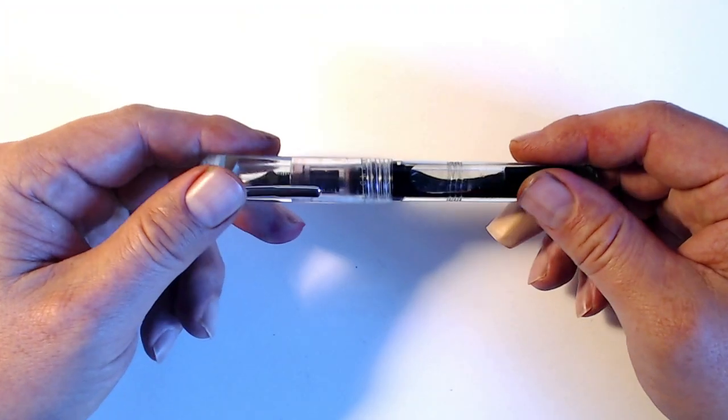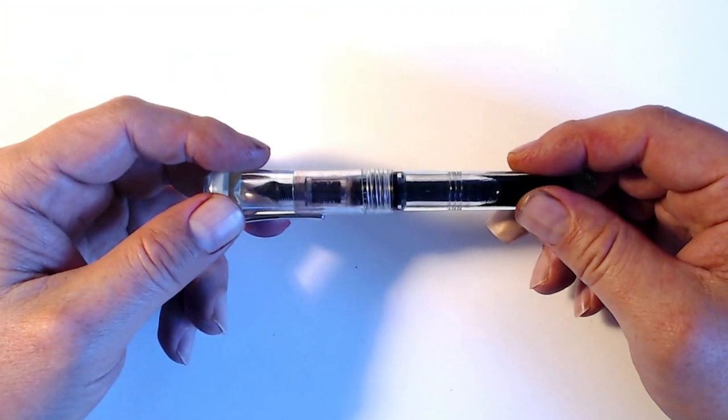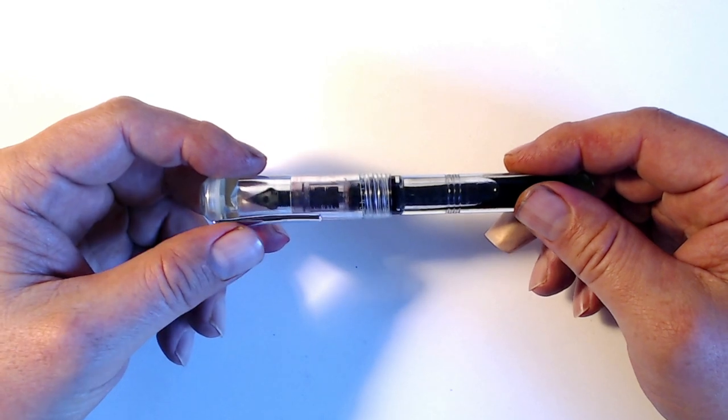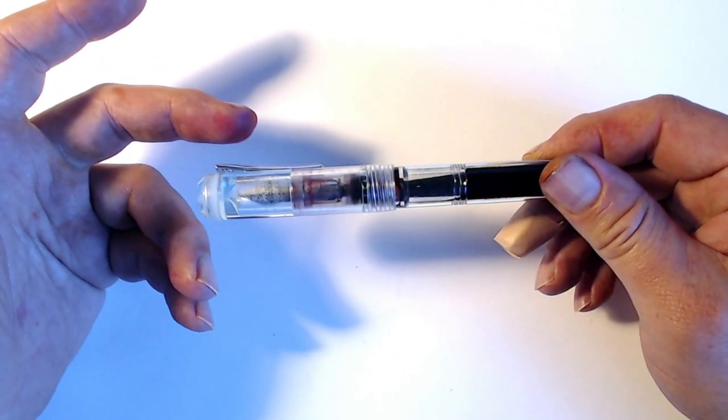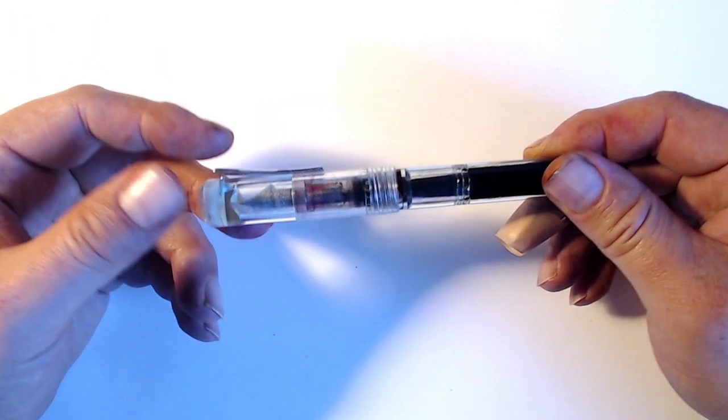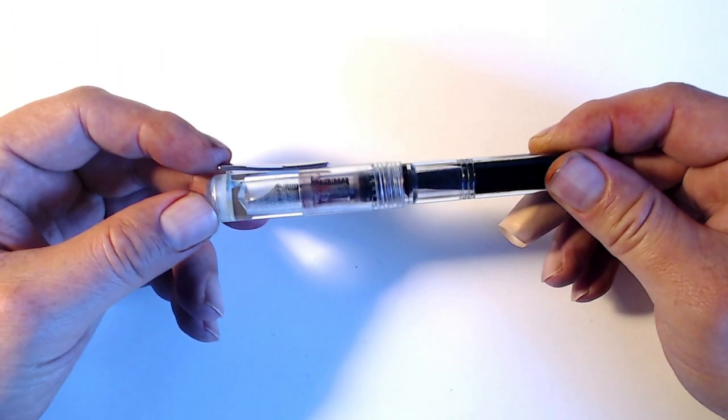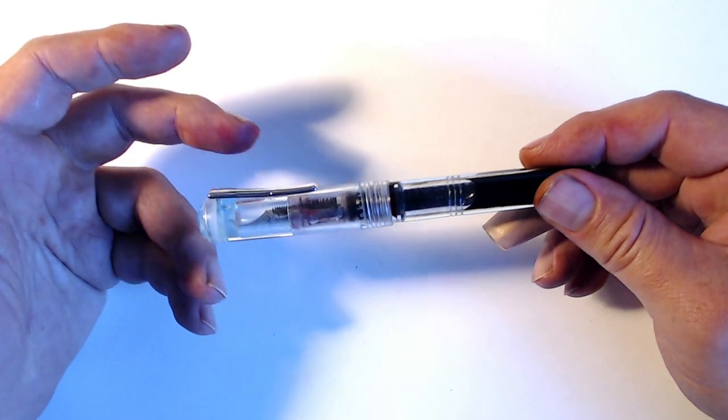You might argue that eyedropping is messy and time-consuming, but that's not the case. It might take a few extra seconds to fill up a pen, and it's probably not something you want to be doing out and about. But is it really that much of an issue? It's actually one of the cleaner methods of filling your pen, since you don't have to submerge your pen into the ink up to the section and then have to wipe it down afterward.